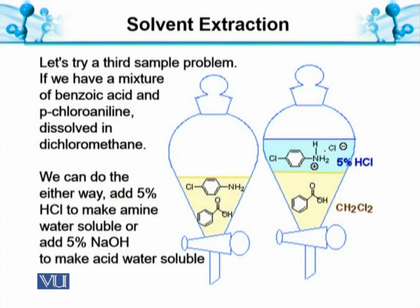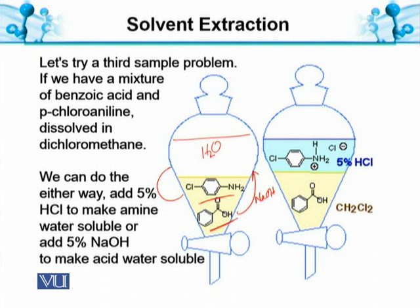Let's try a third sample problem. If we have a mixture of Carboxylic Acid and an Amine — specifically Paracloroaniline — what should we do? Two types of chemistry can be used here. If we treat with Sodium Hydroxide, it is a base and the Carboxylic Acid will form its Sodium Salt, improving solubility in the water layer. And if we treat with 5% HCl, then the amine will form an ammonium salt, NH3Cl.